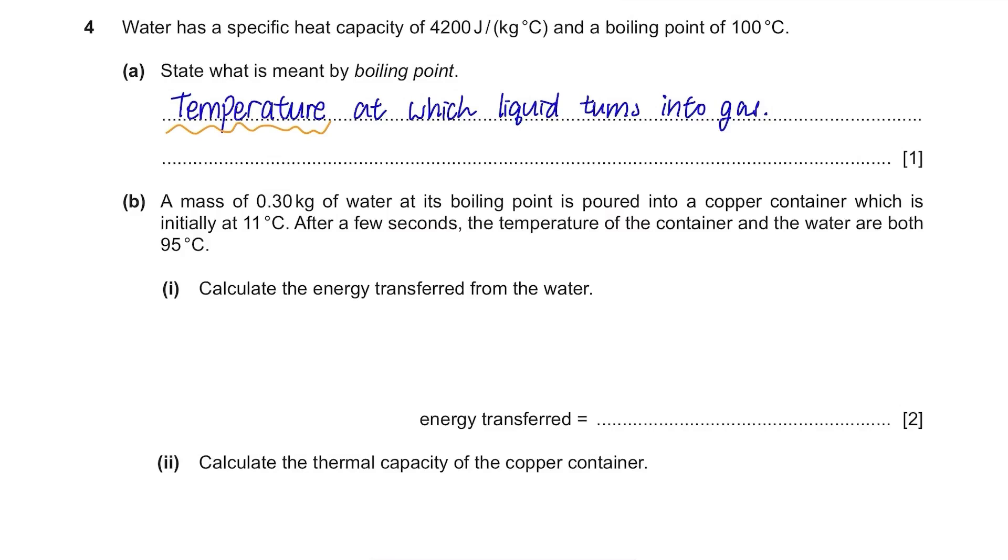Part B. A mass of 0.30 kg of water at its boiling point is poured into a copper container which is initially at 11 degrees Celsius. After a few seconds, the temperature of the container and the water are both 95 degrees Celsius. Calculate the energy transferred from the water. We need to use this formula. E stands for energy, M is mass, C is specific heat capacity and T is the change in temperature. Mass is given here, 0.30 kg, C is here, 4200 and be careful, the change in temperature should be the change in temperature of the water, not the container. So it was 100 in the beginning but changed to 95 degrees. The answer is 6300 joules.